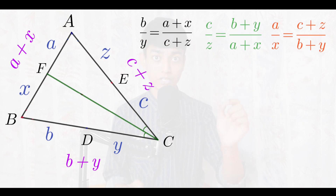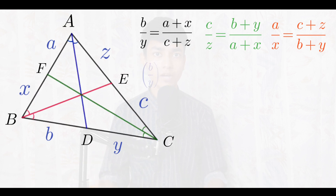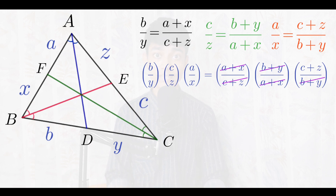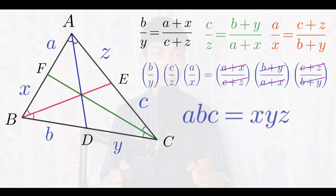Now carefully observe equations 1, 2, and 3. The best way to reach our final answer is to multiply all three equations together. On the left-hand side we get (b/y) · (c/z) · (a/x), and on the right-hand side we get (a + x)/(c + z) · (b + y)/(a + x) · (c + z)/(b + y). On the right-hand side, (a + x), (b + y), and (c + z) all cancel out, leaving 1. After cross multiplication we get a · b · c = x · y · z, which is exactly the answer we were looking for.